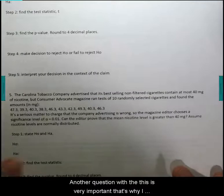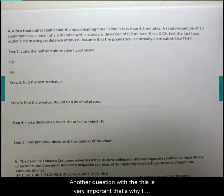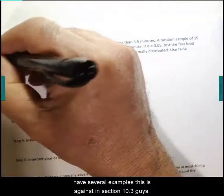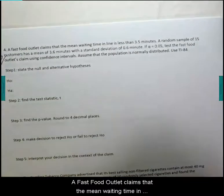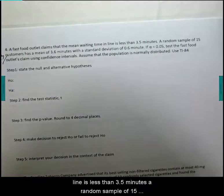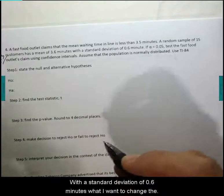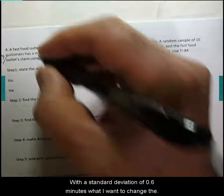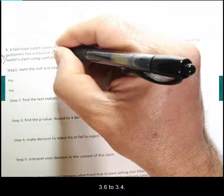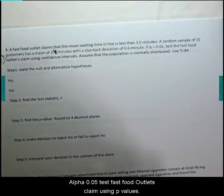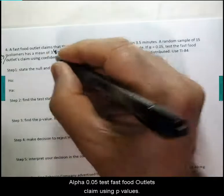Another question—this is still section 10.3. A fast food outlet claims that the mean waiting time in line is less than 3.5 minutes. A random sample of 15 customers has a mean of 3.4 minutes with a standard deviation of 0.6 minutes. If alpha equals 0.05, test the fast food outlet's claim using p-values. Assume that the population is normally distributed.